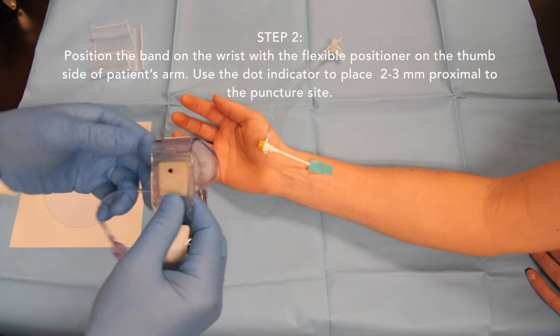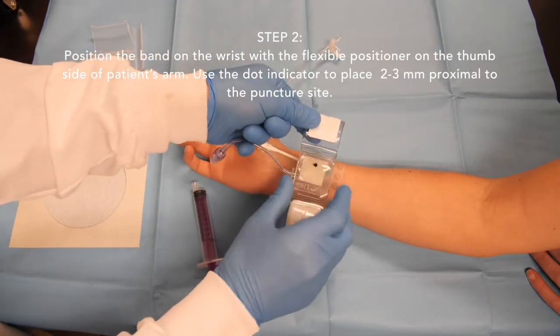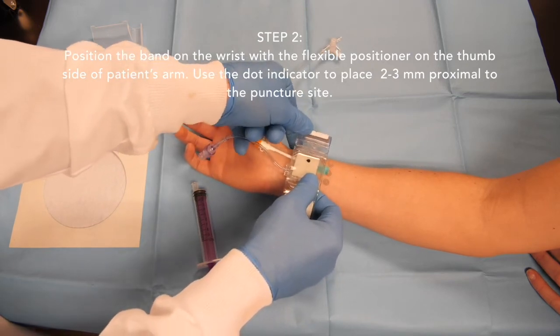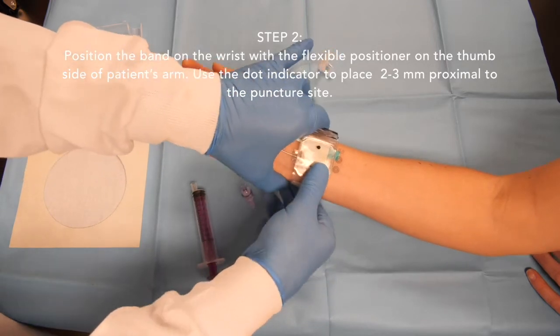Place the band on the wrist with the flexible positioner on the thumb side of the patient's arm. Position the dot indicator 2-3 mm proximal to the puncture site.